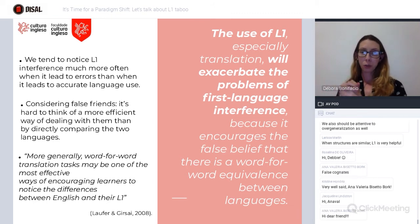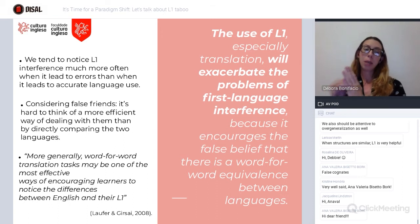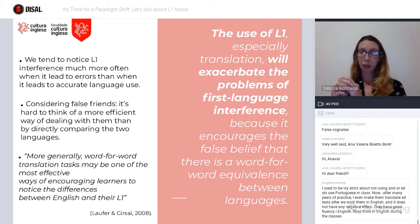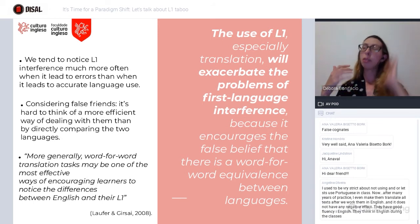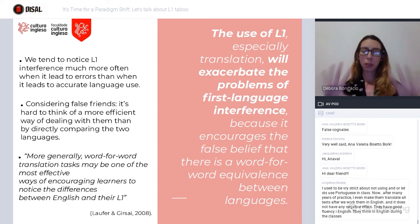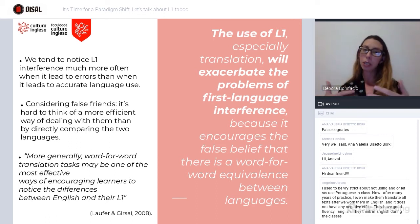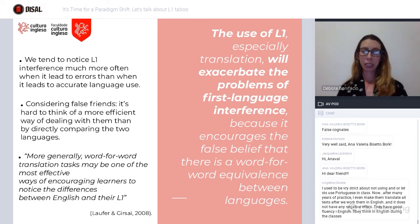Another quote from one of these studies: a word-for-word translation task may be one of the most effective ways of encouraging learners to notice the differences between English and L1. Here we're talking about not just learning English as a mechanical process, but something where I sit and reflect, compare with my own language, analyze the differences, and become aware of the language in a more holistic sense.